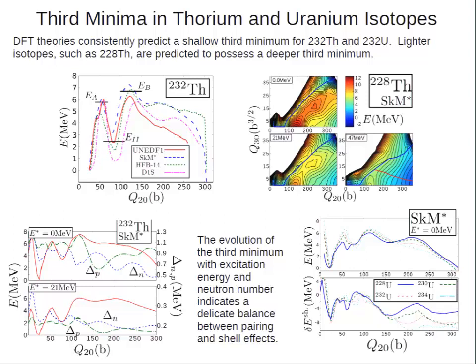Doing a more comprehensive study along with the finite temperature work, I found that the lighter isotopes of thorium and uranium actually do show a somewhat deeper pocket. Thorium-228 shows a minimum that is somewhat deeper than thorium-232, which I found very interesting — why should the lighter isotope have a deeper minimum?